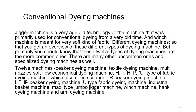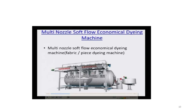The twelve machines include: beaker dyeing machine, textile dyeing machine, multi-nozzle soft flow economical dyeing machine, high temperature high pressure U-type dyeing machine used also for scouring and dyeing, IR beaker machine, and HTHP beaker dyeing machine — all very commonly used in industrial dyeing. The multi-nozzle soft flow economical dyeing machine is suited for fabric and piece dyeing; the fabric ends are stitched and it rotates within itself, resulting in very even dyeing.